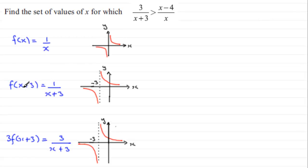And then looking at f(x+3) I'd have 1/(x+3) and this would translate the graph 3 units to the left. So you can see we get something like this with this vertical asymptote now at minus 3 and then I'd want to multiply this by 3, 3 lots of f(x+3) and it would give us the graph that we would want.